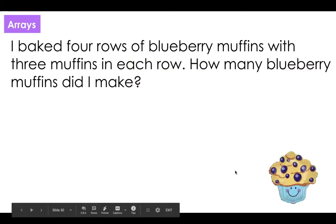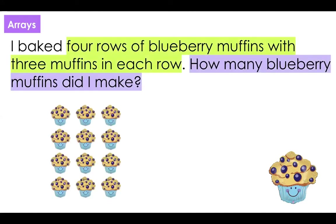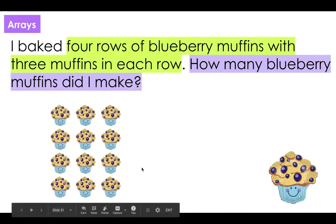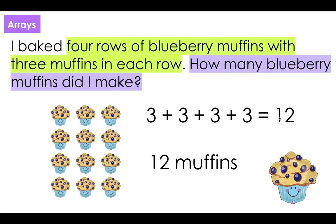Arrays. I baked four rows of blueberry muffins with three muffins in each row. How many blueberry muffins did I make? Go ahead and pause the video to solve on your own. I see that I have four rows of blueberry muffins with three in each row, so I decided to draw a picture — four rows with three muffins in each row. Then I'm going to count them all up: three plus three plus three plus three equals 12. You also could have done three times four equals 12. I made 12 muffins.